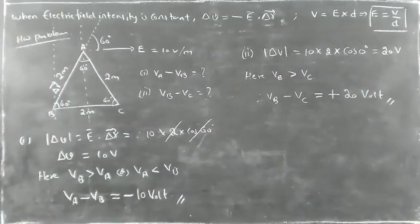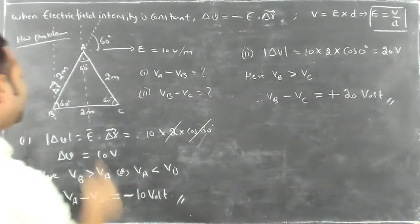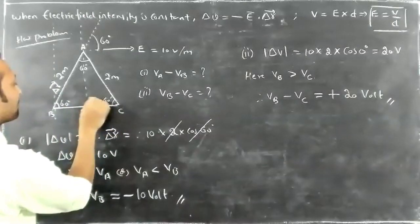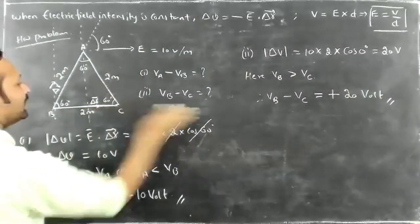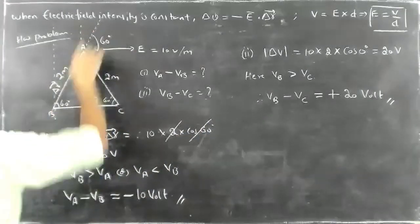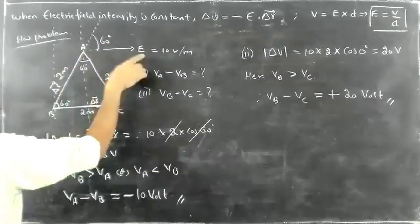I hope you understand this one. This one will be the delta R. Therefore, delta R and E both are in the same direction. Angle between them is equal to 0. Between A and C, delta R and E have angle 60.